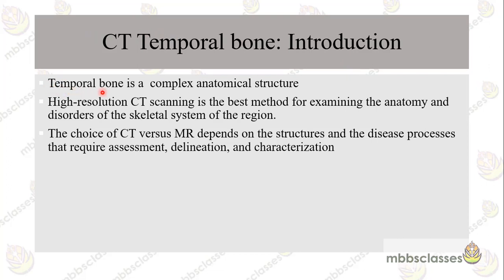As you know, the temporal bone is a complex anatomical structure and we have already discussed the anatomy of temporal bone in the anatomy section of temporal bone classes. To image the temporal bone, the two imaging modalities are the CT scan and MRI. To visualize the bony anatomy and disorders of the skeletal region, CT scan is the best method. Sometimes MRI is also done, but the choice of performing CT or MRI depends on what structures we want to visualize — the clinical conditions and the structures which need assessment, delineation, and characterization.